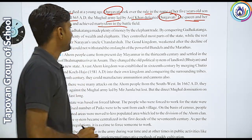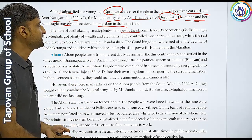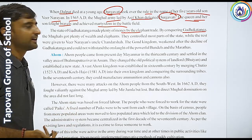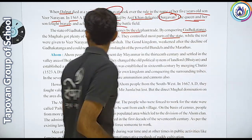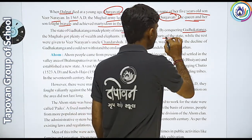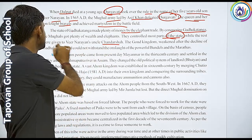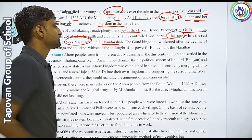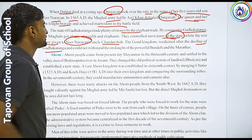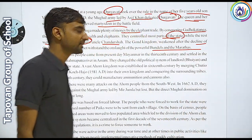The state of Gadhkanga had earned plenty of money through the elephant trade. By conquering Gadhkanga, the Mughals got plenty of wealth and elephants and controlled most of the state. The rest was given to Veer Narayan's uncle Chandrashah. The Gond kingdom weakened after the decline of Gadhkanga and could not withstand the onslaught of the powerful Bundelas and Marathas.